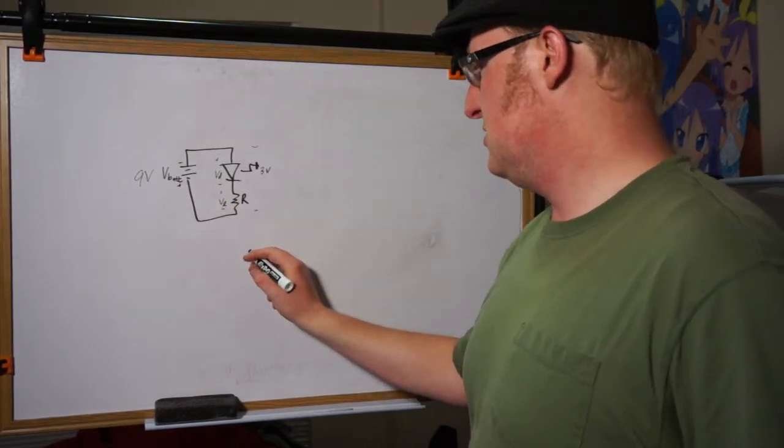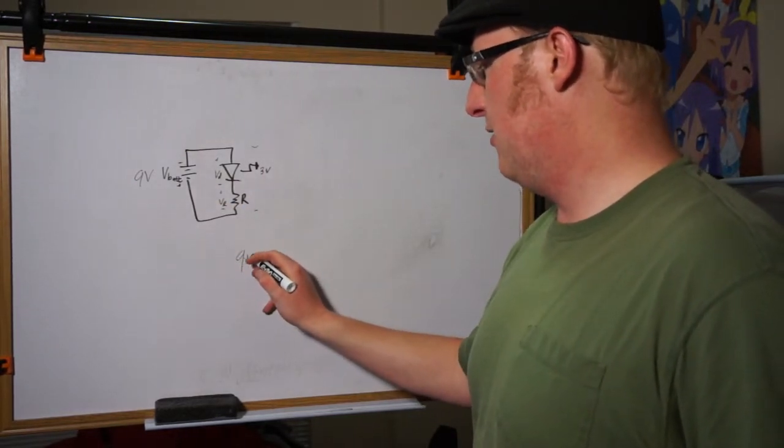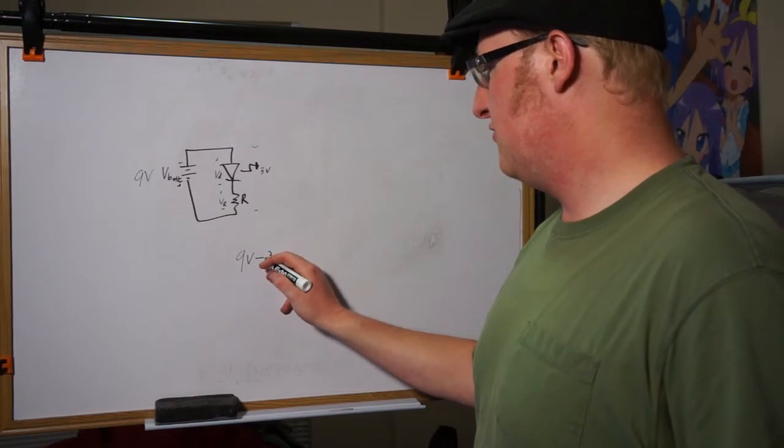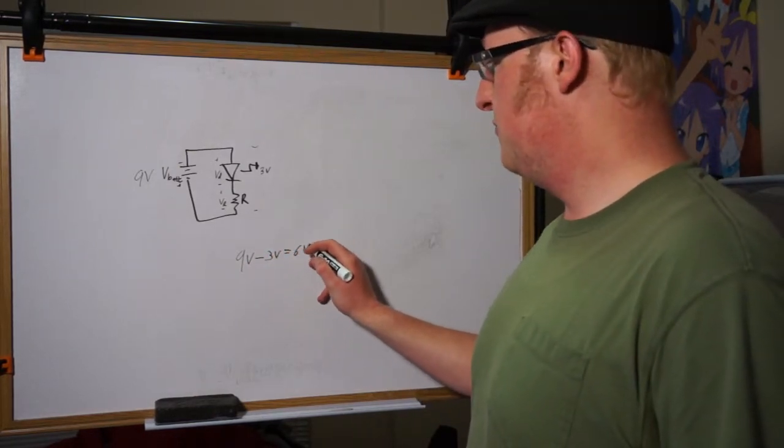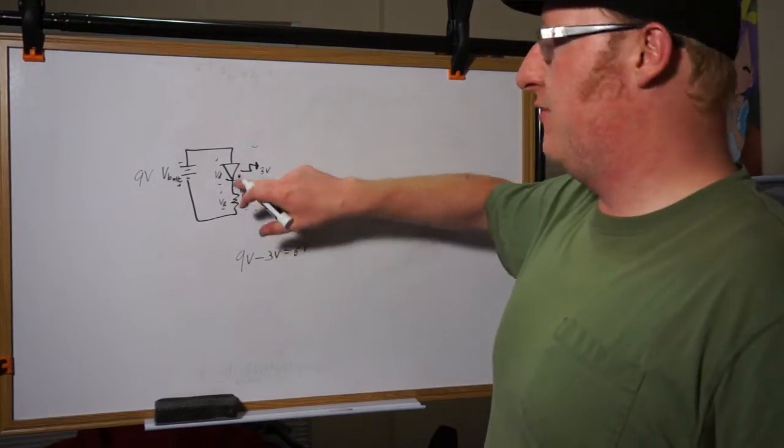So we know that our voltage through the resistor is simply equal to the 9 volts coming from the battery minus the 3 volts we lost in the diode. Straightforward enough, that gives us 6 volts. So this here, we know that voltage is 6 volts. That still doesn't tell us what the resistance is.